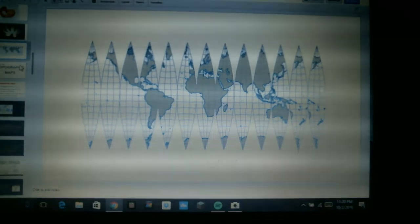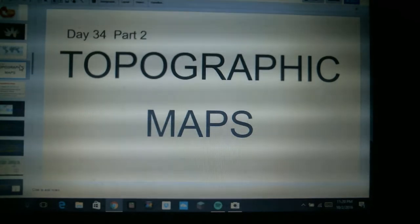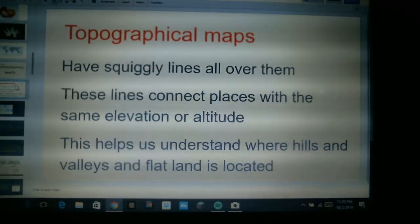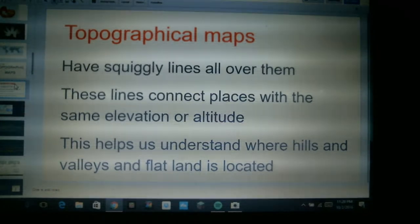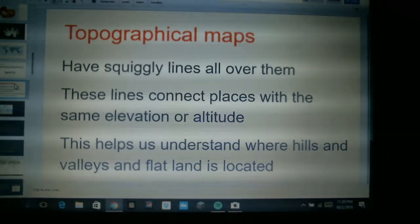Okay, that's the end of the first part of the discussion today. Let's go on to part 2, we're going to look at topographic maps. Topographical maps, these are the ones that have squiggly lines all over them. These lines connect places with the exact same elevation or altitude.